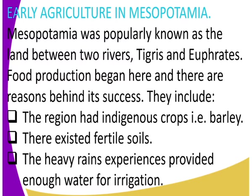Not forgetting that the region experienced rains that provided enough water for irrigation. Whenever there is good rain there is no problem for the crops, so there was enough rain for irrigation. Now let's look at some of these indigenous crops.